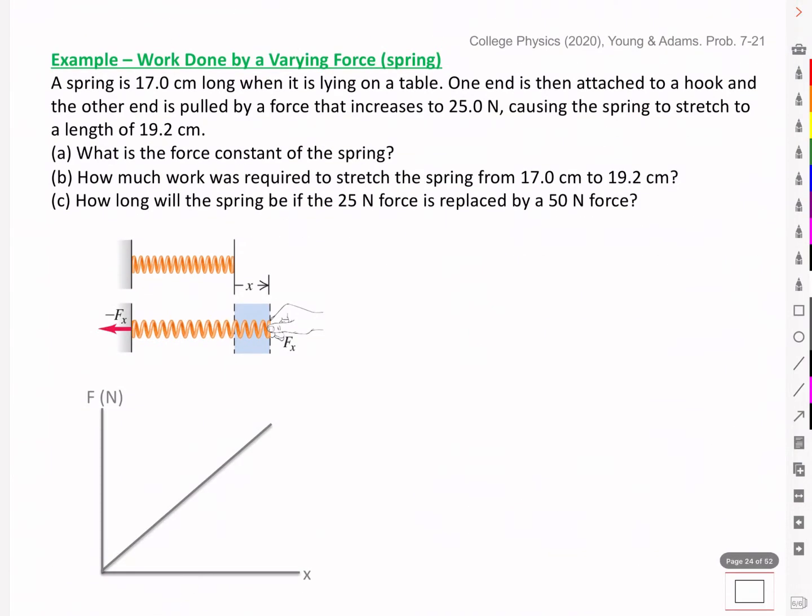Let's look at an example. Here we have an example of work being done by a varying force, specifically a spring. A spring is 17.0 cm long when it is lying on a table. One end is then attached to a hook and the other end is pulled by a force that increases to 25 newtons, causing the spring to stretch to a length of 19.2 cm.